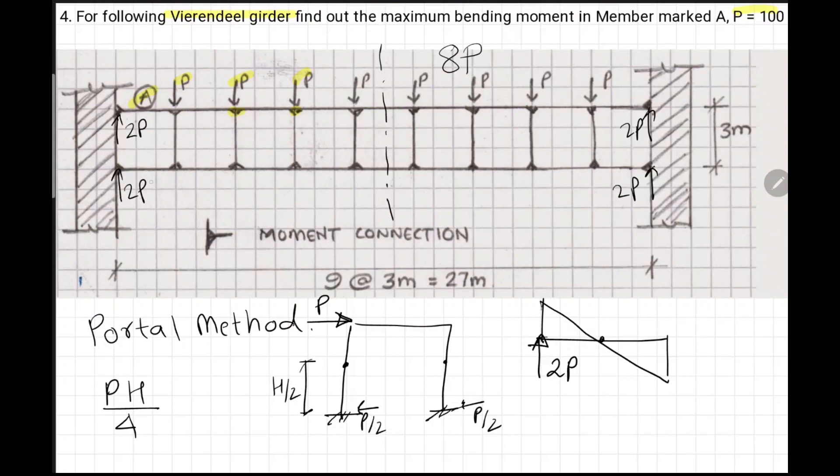If this is 3 meters, half will become 1.5 meters. So the moment will be 2P times 1.5 meters. So 200 times 1.5, which will give us 300 kilonewton meters.